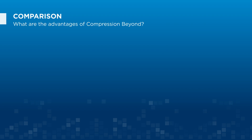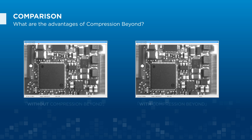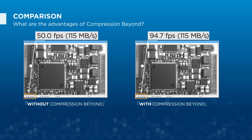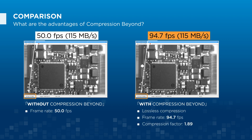What are the advantages of Compression Beyond? With Compression Beyond, you can benefit from a more efficient use of bandwidth. Based on the example here, you can see that the camera frame rates nearly doubled when Compression Beyond is applied. This example gives you a compression factor of 1.89 and brings the frame rates from 50.0 FPS to 94.7 FPS.